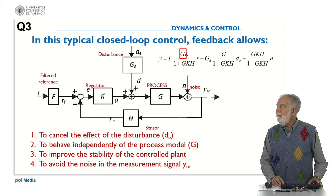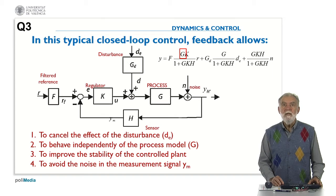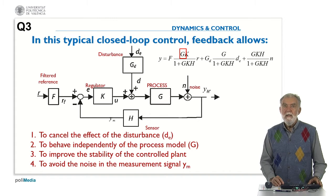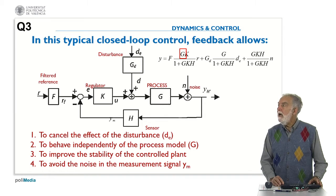To behave independently of the model, we see that in the output the model G is present. So only in some conditions, probably you remember that when K was very large this ratio was one. But in some other cases of course the model of the process influences the behavior of the output.